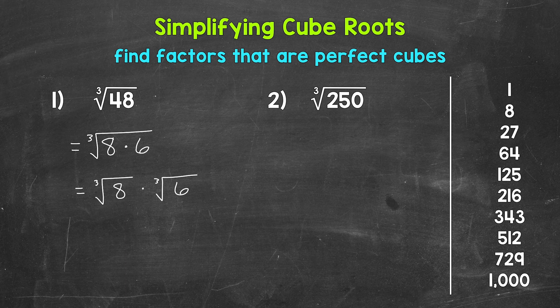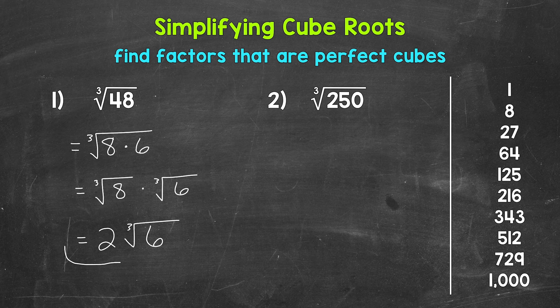Now we can take the cube root of 8, which is 2. 2 times 2 times 2 equals 8, so the cube root of 8 is 2. So we end up with 2 times the cube root of 6, and that's our final simplified answer. We can't simplify or break this down any further. Our final simplified answer is 2 times the cube root of 6.